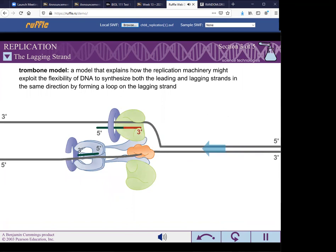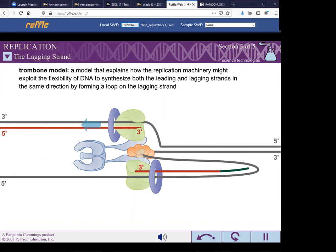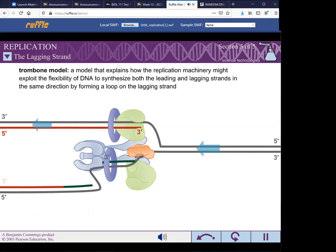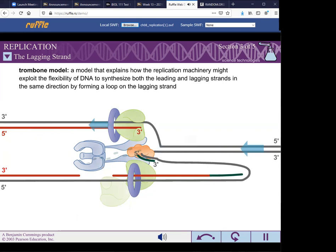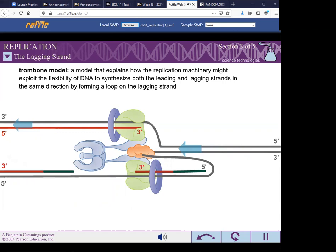The trombone model explains how the replication machinery might exploit the flexibility of DNA to accomplish this task. According to this model, the single-stranded DNA template for the lagging strand pulls through the DNA polymerase, similar to the slide of a trombone. This flexibility allows the DNA polymerase to add nucleotides to the 3' end of the growing lagging strand.